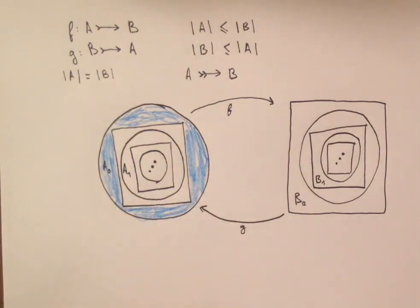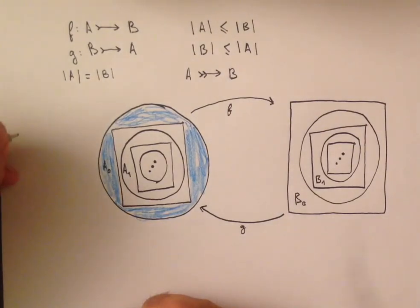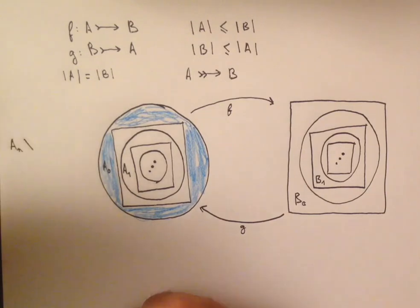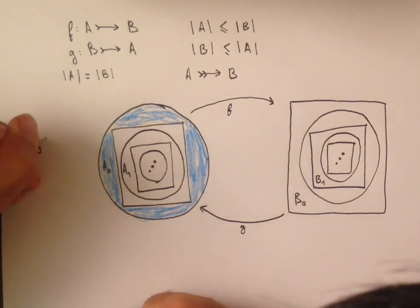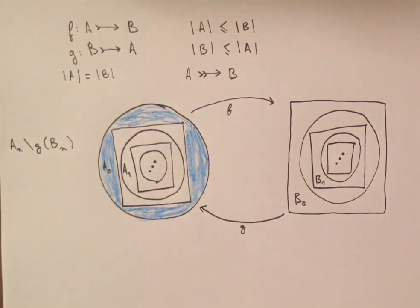And so this region, in general, it's a set of the form AN complement G of BN. And in this case, it's A zero complement G of B0.